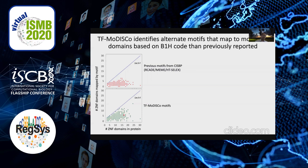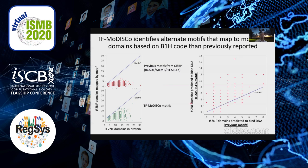The number of zinc finger domains now seems quite indicative of the number that are used to bind DNA in at least one motif. We can make a direct comparison with the number of zinc finger domains we found to engage DNA versus what is out there in the CIS-BP database, and we see that we really improve a lot — many more domains are now shown to bind DNA than were previously reported.